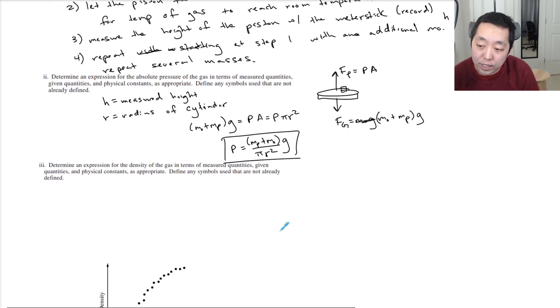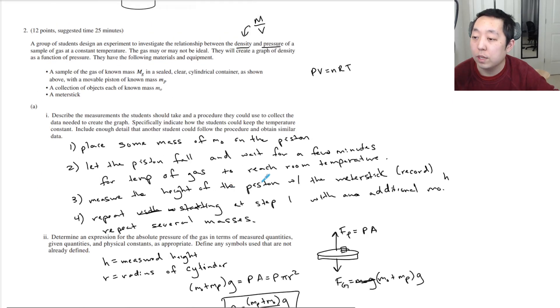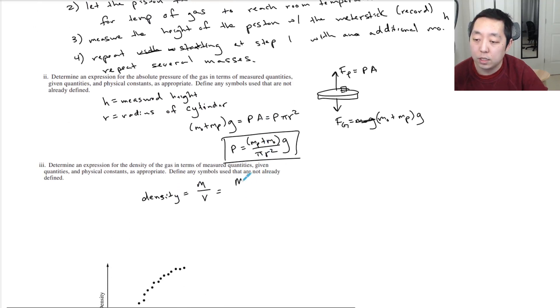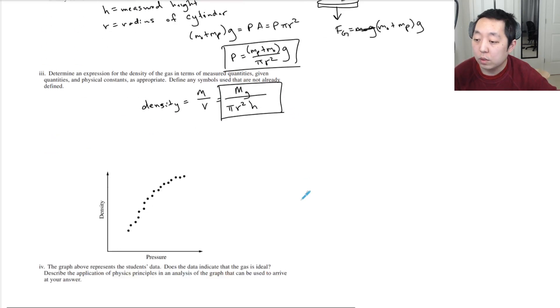Determine expression for the density of the gas in terms of the measured quantity. Density is equal to mass over volume. We're talking about the mass of the gas here, Mg is the gas. And the volume of a cylinder is pi R squared times H, where that's the height that we measured. So that would be the density.